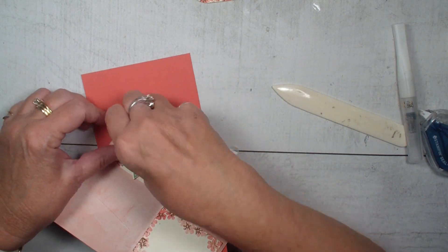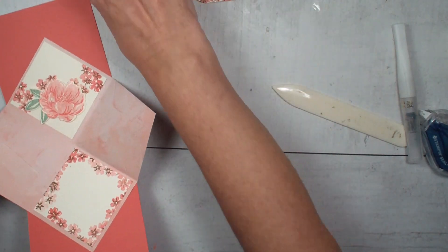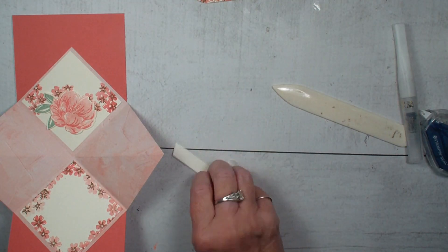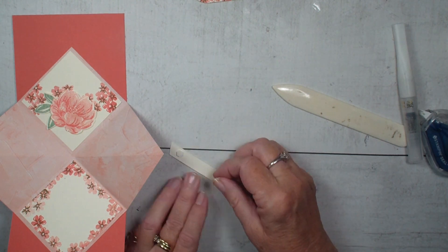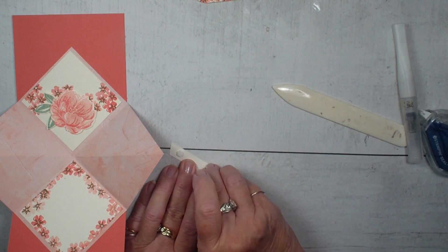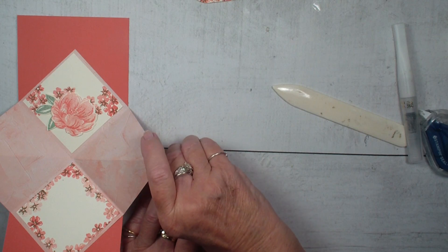Put those leaves right there. I'm going to add my happy birthday. I'm going to use my small dimensionals for that and just place that along the bottom of my card.